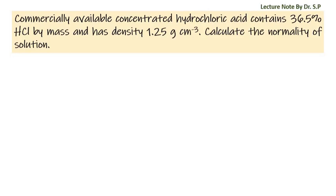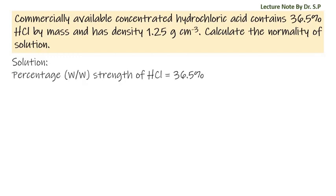We have a question: commercially available concentrated hydrochloric acid contains 36.5% HCl by mass and has density 1.25 g/cm³. Calculate the normality of solution. Solution: Here, given percentage (w/w) strength of HCl is 36.5%.